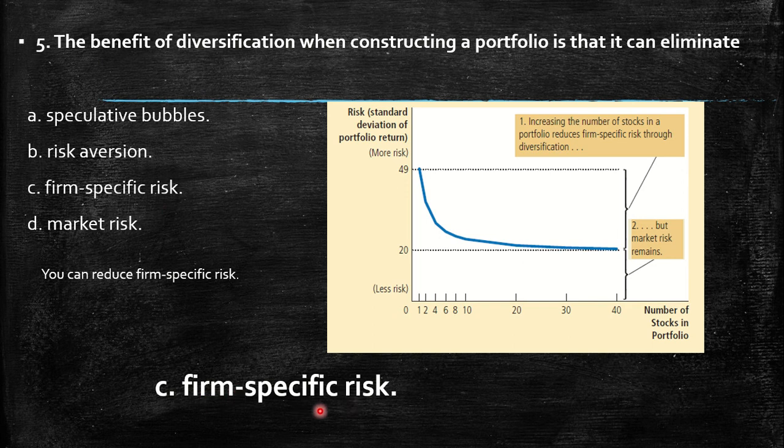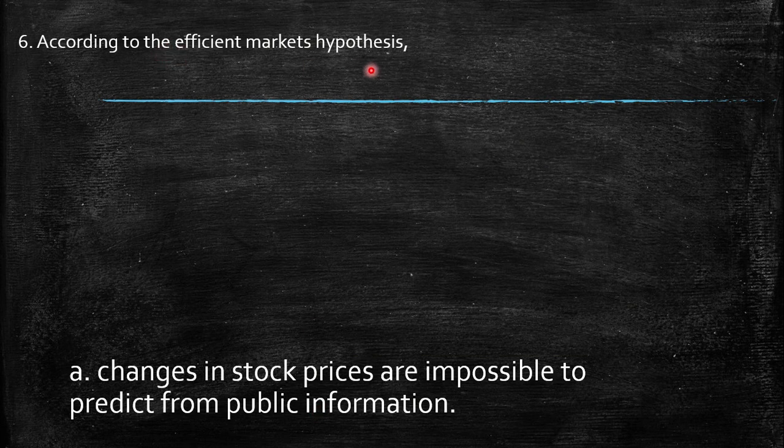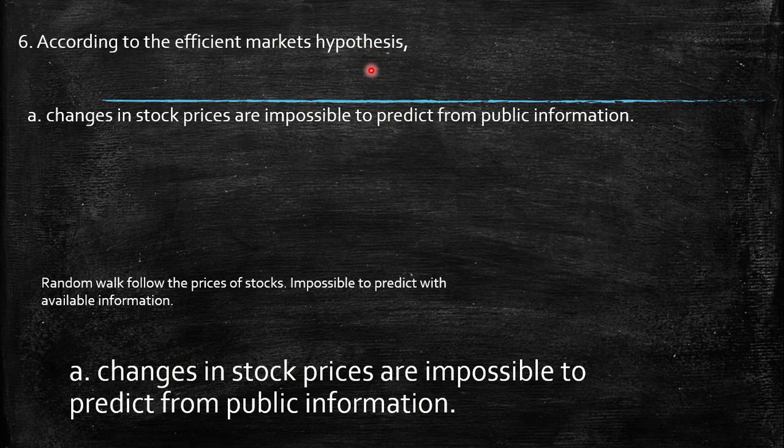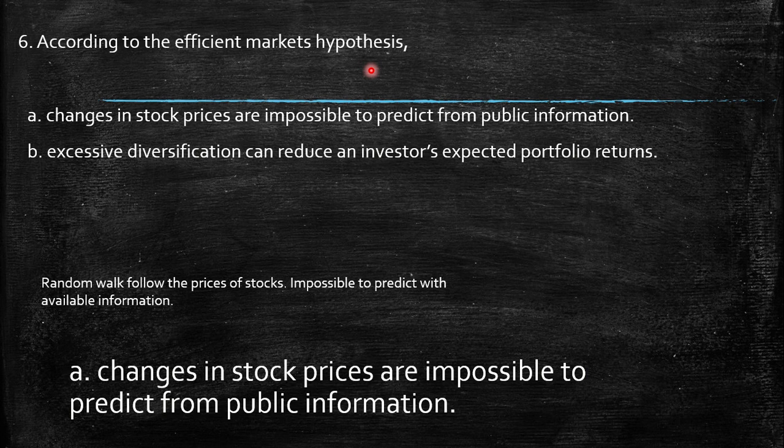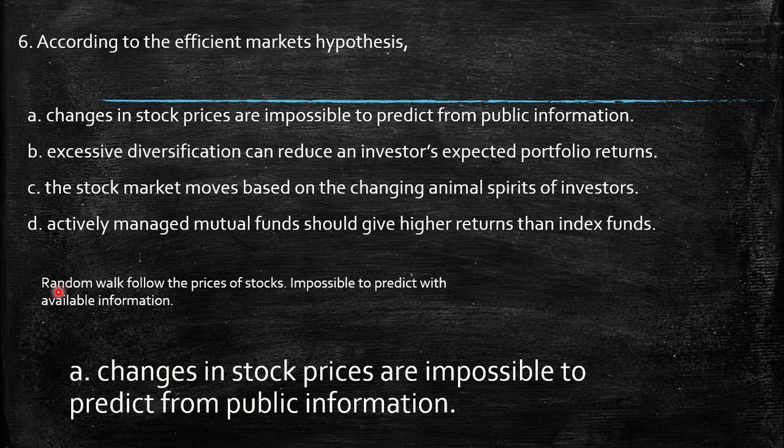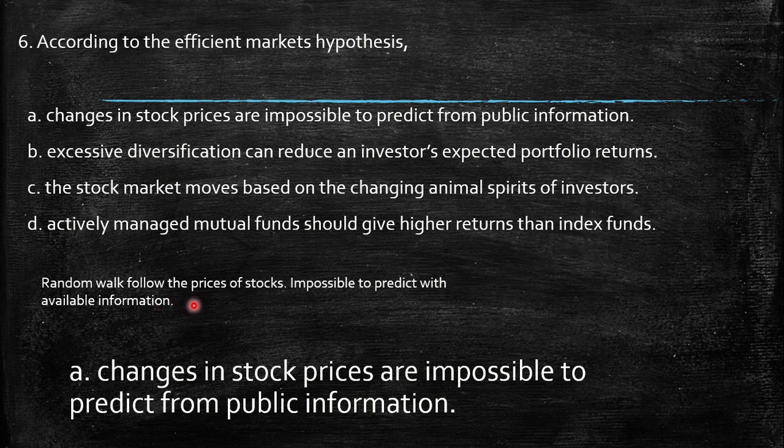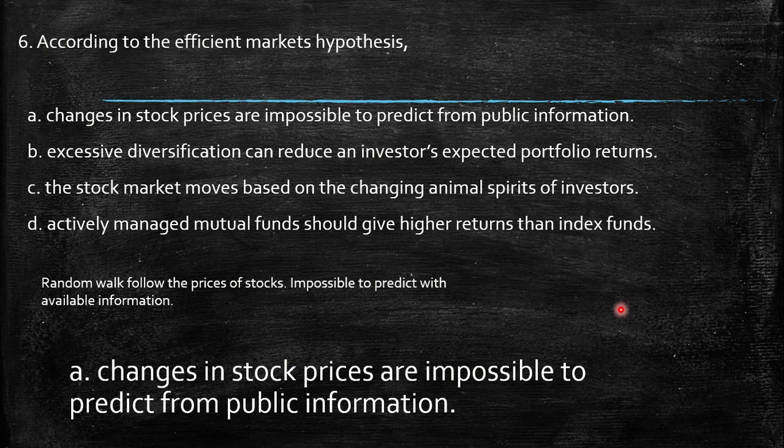Last question: According to the efficient markets hypothesis: changes in stock prices are impossible to predict from public information, excessive diversification can reduce expected portfolio returns, the stock market moves based on changing animal spirits, or actively managed funds should give higher returns than index funds. It's important to know that prices follow a random walk - no one can predict them, otherwise everybody would earn money. Changes in stock prices are impossible to predict from public information, even though public information reflects the real or close to real prices.